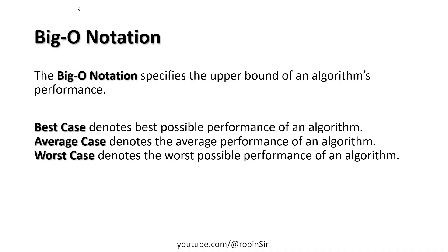We use Big O notation to measure the performance of an algorithm. Big O notation is a function that tells us about the worst possible performance of an algorithm. An algorithm can have a best case, an average case, or a worst case. Best case is the situation where the algorithm gives optimum performance; average case is found by running the program several times and averaging the results; worst case is how the algorithm performs in the most unfavorable situation.